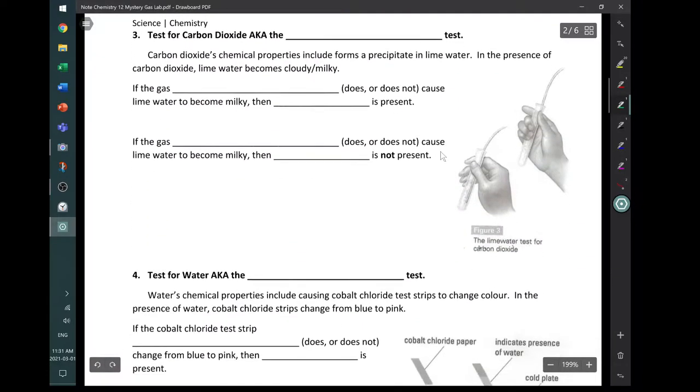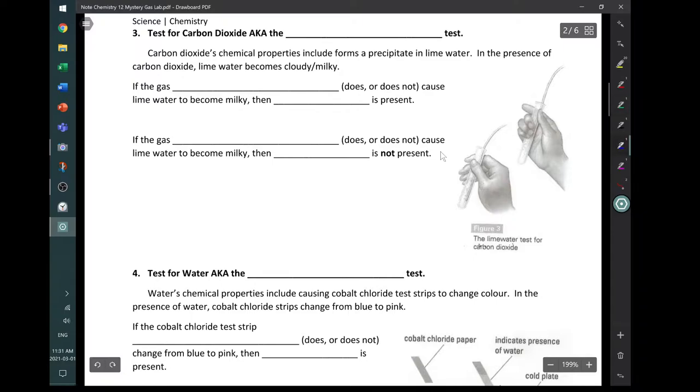There are other tests here, three and four. This is a test for carbon dioxide. This is called the lime water test. And they use something called lime water. Carbon dioxide's chemical properties includes forming a precipitate. A precipitate is a little solid. We would make this lime water go from a watery, transparent color to a milky kind of color. In the presence of carbon dioxide, we just bubble it through this lime water, and the solution becomes cloudy or milky. If the gas does cause lime water to become milky, then CO2 is present. If the gas does not cause lime water to become milky, then CO2 is not present.